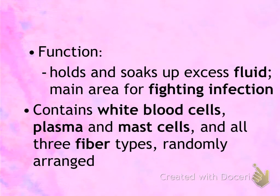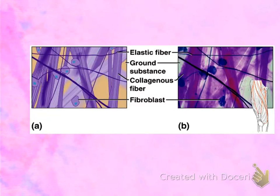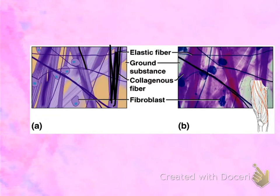Loose connective tissue also contains all three fiber types: the collagen fiber, the elastic fiber, and the reticular fiber. One of the first things you notice about areolar connective tissue is the numerous fibers running through the tissue — all of the thick string-like materials are fibers.